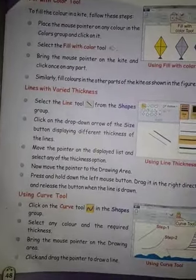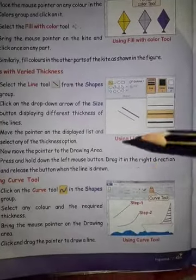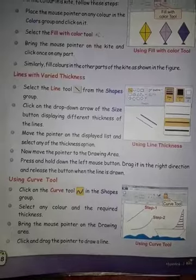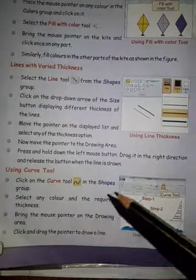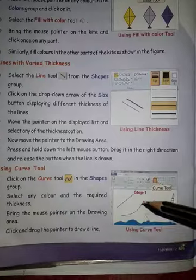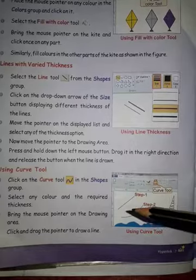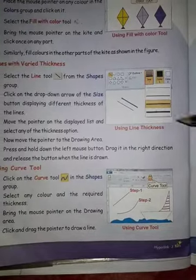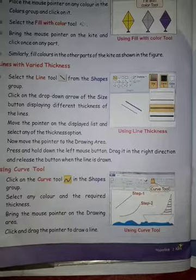These are the steps to select the Line Tool and draw a line on the Paint window. Next is the Curve Tool. The Curve Tool is used to draw different curves on the Paint window. With the Line Tool you can only draw straight lines, but with the Curve Tool you can draw different curves.